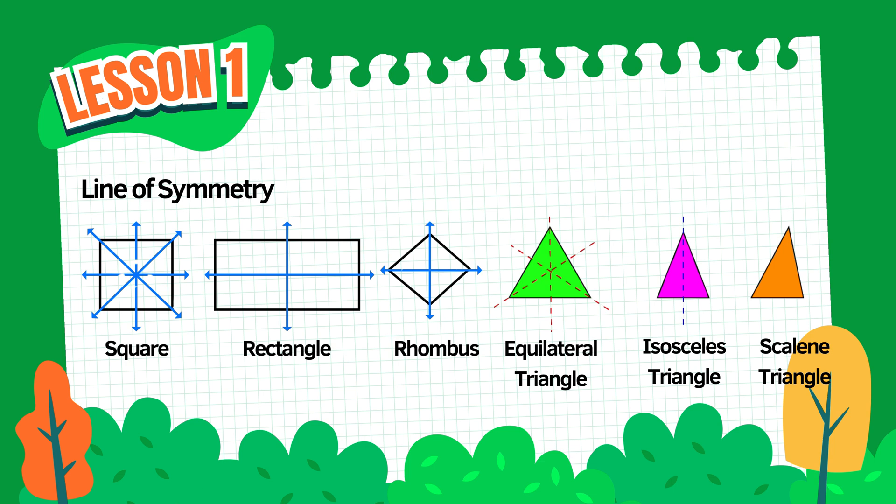Its sides are all equal, but the angles are not right angles like a square. An equilateral triangle has three lines of symmetry: one through each vertex down to the middle of the opposite side. All its sides and angles are equal. An isosceles triangle has one line of symmetry, which goes from the top vertex down to the middle of the base. Only two sides and two angles are equal.